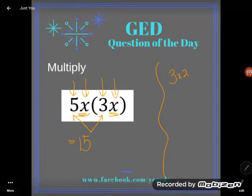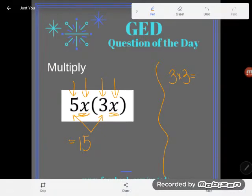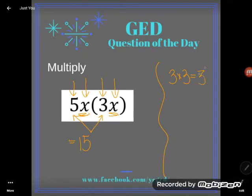But it's also true that another way to write three times three is as three squared. Remember that we can use exponents to talk about repeated multiplication.